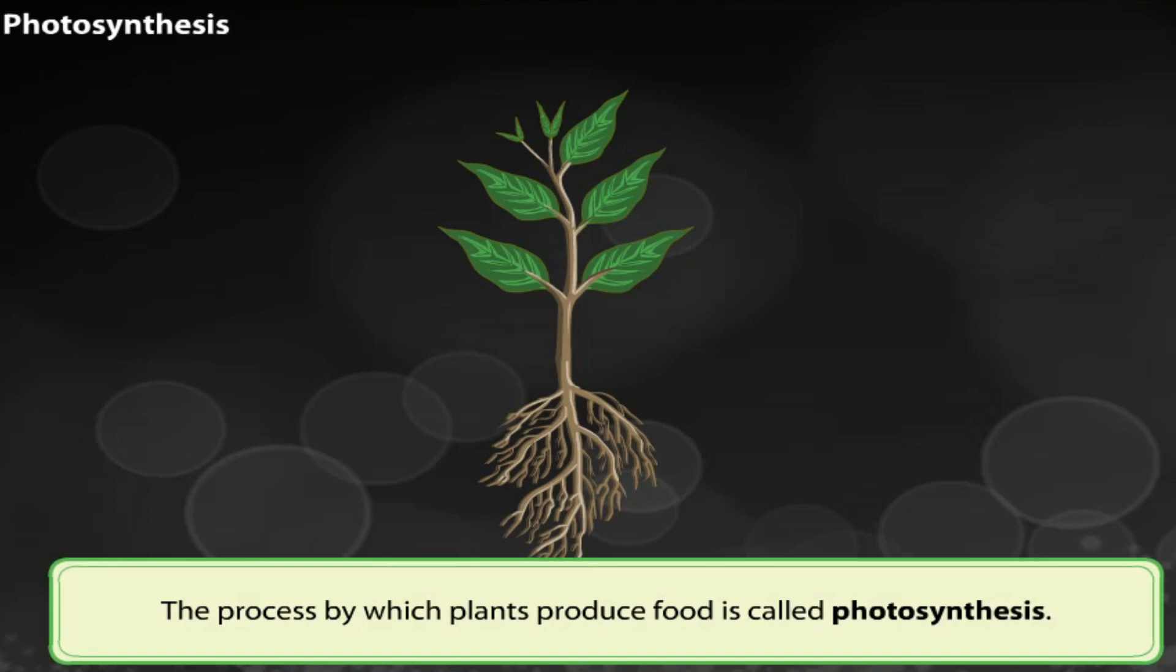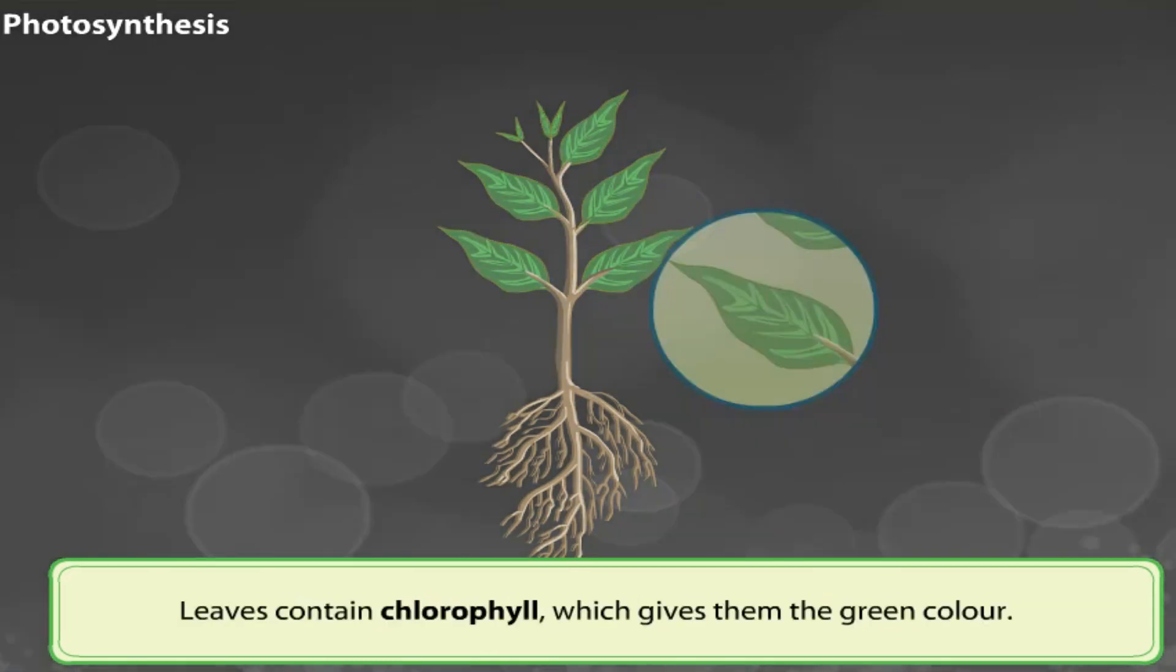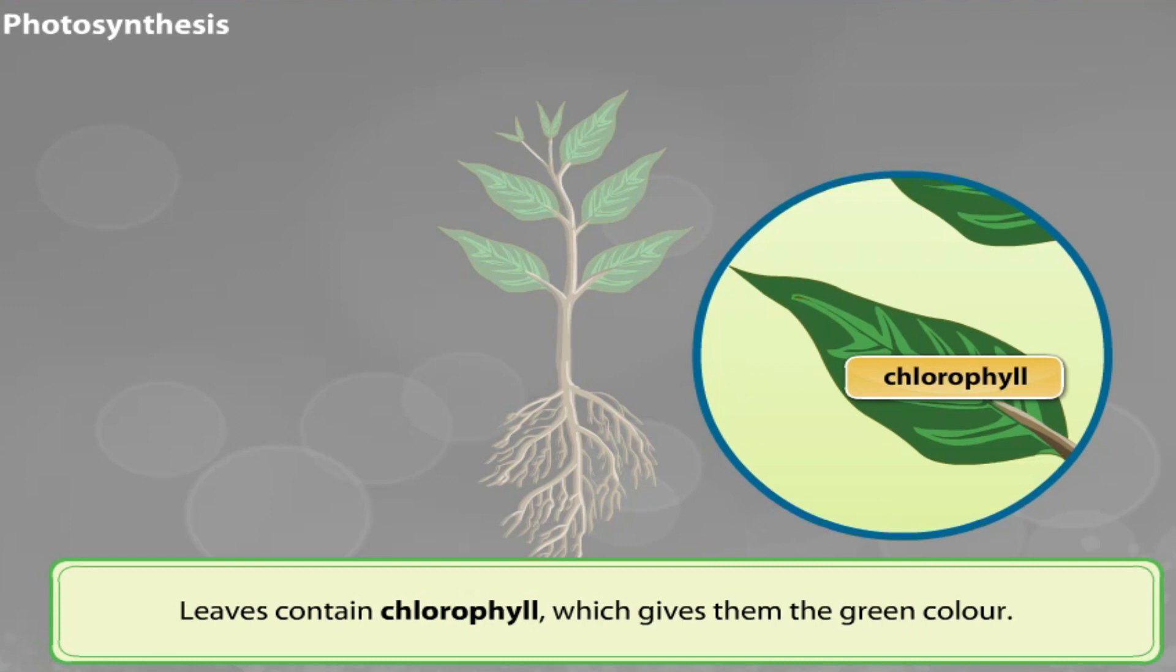The process by which plants produce food is called photosynthesis, as you'll remember from last year. Here's a recap. It takes place in the leaves of a plant. Leaves contain a green substance called chlorophyll.